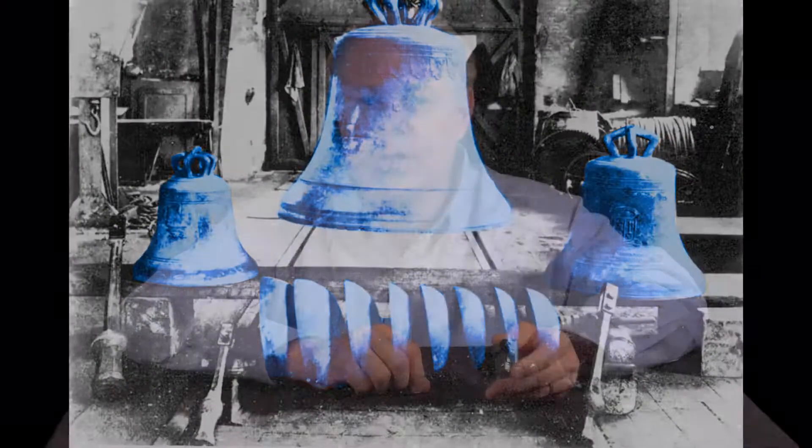Automated music boxes began as cumbersome sets of bells struck by hammers, but over the course of several hundred years, they've evolved into compact devices like this one.